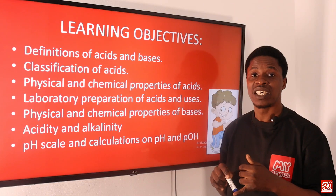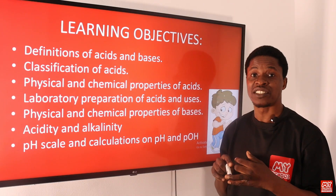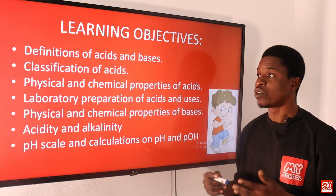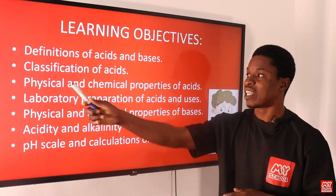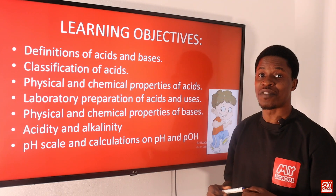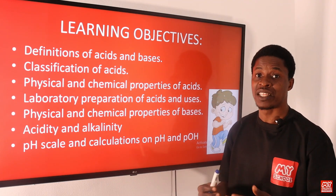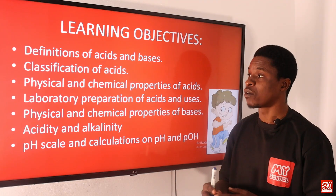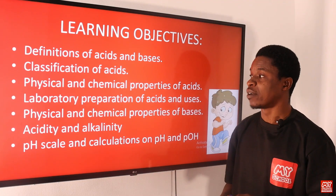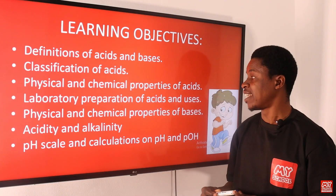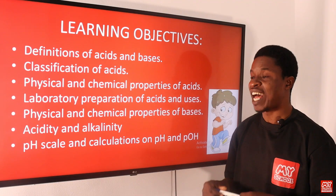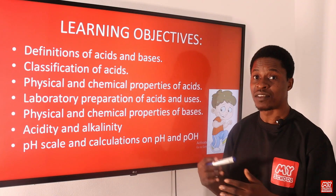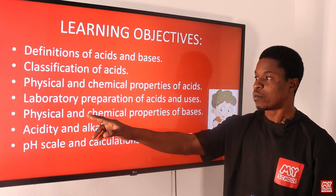We're talking about acids based on their sources, we classify acids based on their strength, and I will also be talking about based on their concentration. We'll also be looking at physical and chemical properties of acids — how do you identify acids physically, and what chemical reactions do they undergo? We'll also be looking at laboratory preparation of acids and their uses — how to prepare acids in the lab, not industrial.